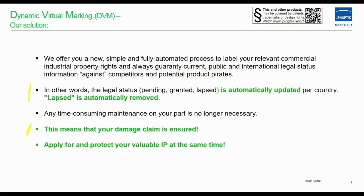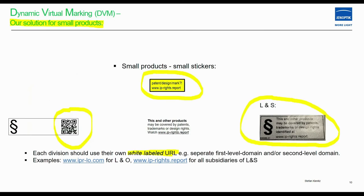We offer a new, simple, and fully automated process to label your relevant commercial industrial property rights and always guarantee current, public, and international legal status information against competitors and potential product pirates. In other words, the legal status — pending, granted, or lapsed — is automatically updated per country. Lapsed rights are automatically removed. This means that your damage claim is ensured.